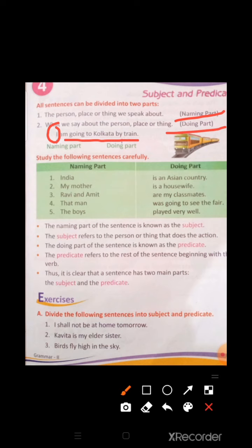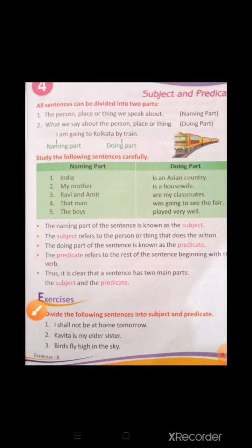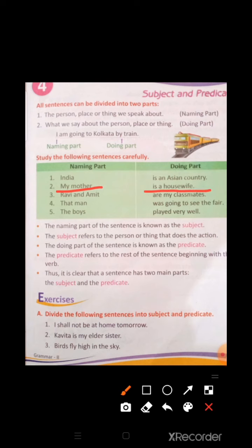Study the following sentences carefully. Here, sentences are divided into naming part and doing part. First sentence: 'India is an Asian country.' Here, 'India' is the naming part and 'is an Asian country' is the doing part. 'My mother is a housewife.' — 'My mother' is naming part; 'is a housewife' is doing part. 'Ravi and Amit are my classmates.' — 'Ravi and Amit' is the naming part; 'are my classmates' is the doing part.